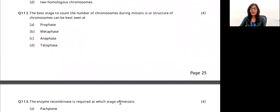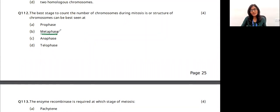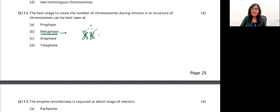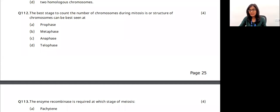The best stage to count chromosomes during mitosis is metaphase. In prophase, chromosomal structure is not clearly visible. In metaphase, chromosomes are arranged in the equatorial plane, and only in this stage can you see the structures and count the number of chromosomes clearly.